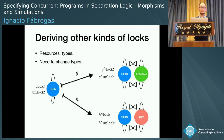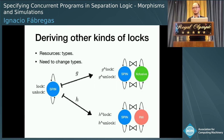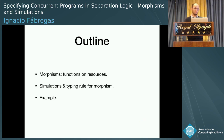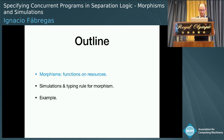Apart from that, what we want is not to redo the whole specification. We want the specification we already had to be transformed into the specification for the derived locks. So in the remainder of the talk, I'm going to show you precisely what these morphisms are, a typing rule for morphisms, why we need simulations, and an example.